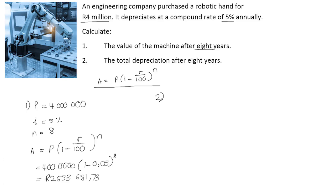The next part of the question asks us to calculate the total depreciation after an 8-year period. In order to do that, we take the initial value of the robotic hand, which was 4 million rand, and we subtract the value of the machine after 8 years. On simplifying the equation, we get the following. Therefore, the total depreciation after 8 years is R1,346,318.27.